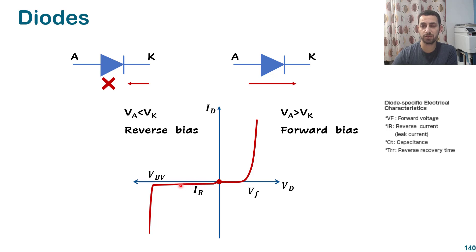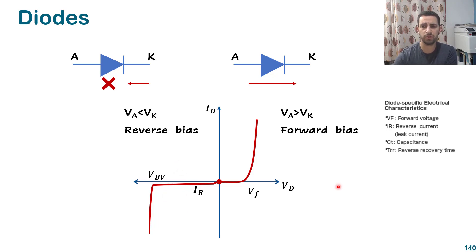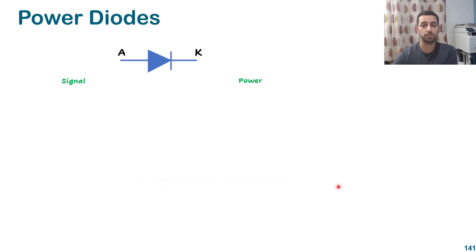That leakage current is very tiny for some diodes and a little bit larger and concerning for others. We have here a point which is the breakdown voltage where we break the diode and it will not work anymore. We have some diodes like zener diodes, which have a smaller breakdown voltage and can work for voltage regulation, but we will ignore the zener diode for this talk.